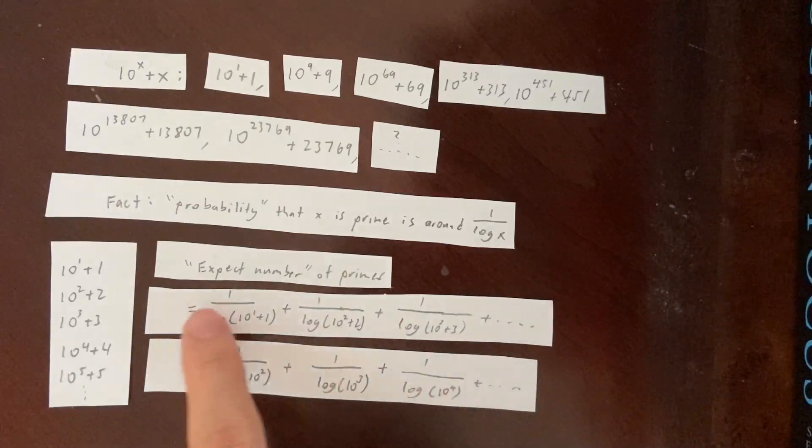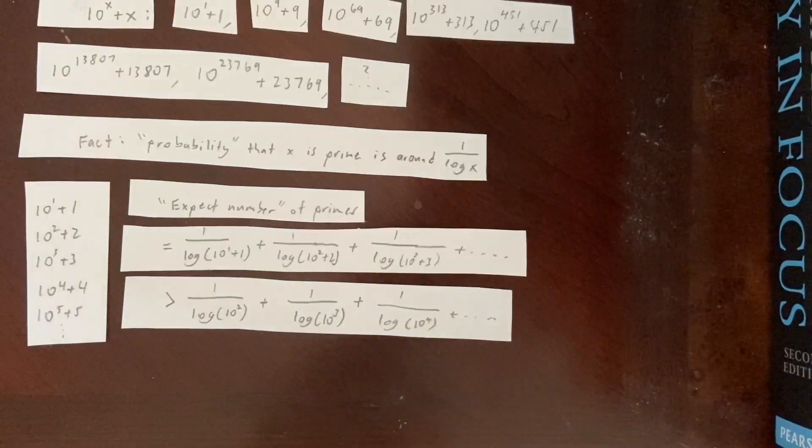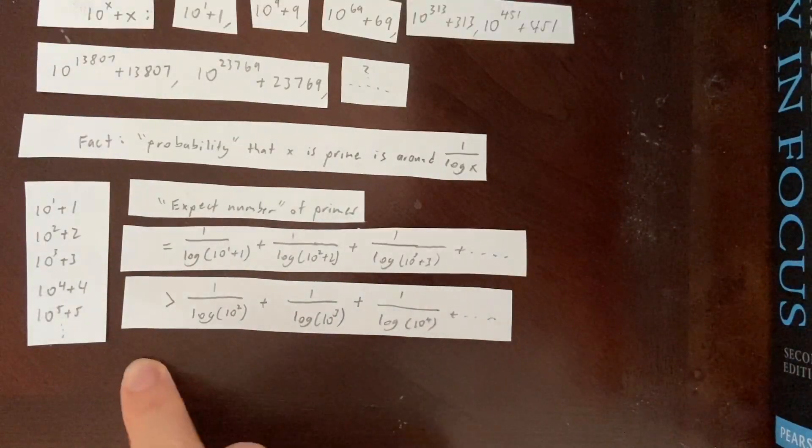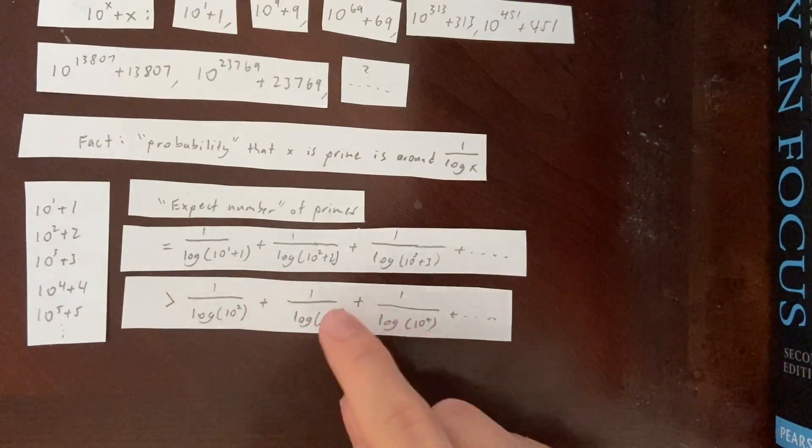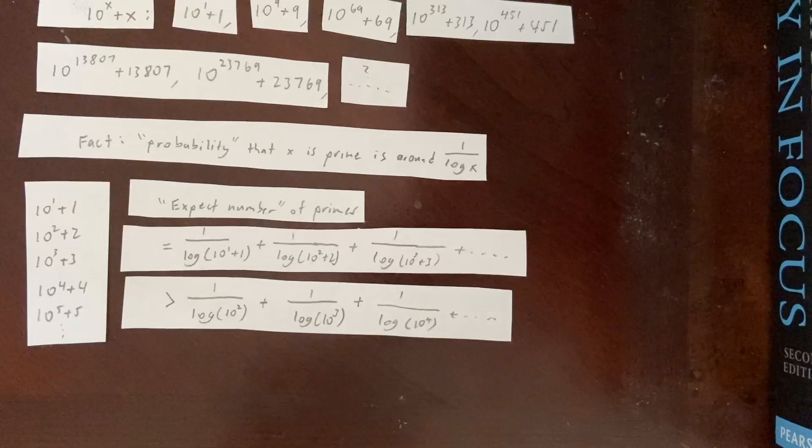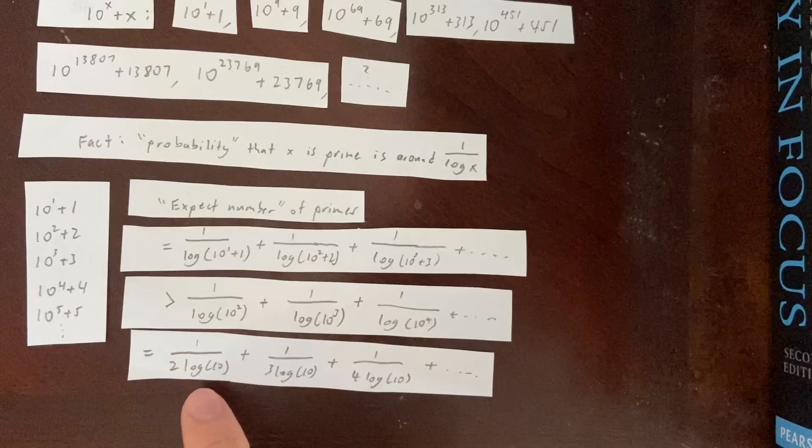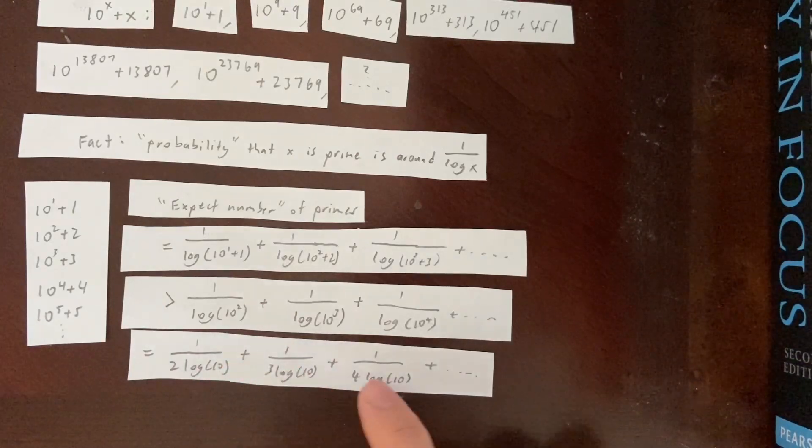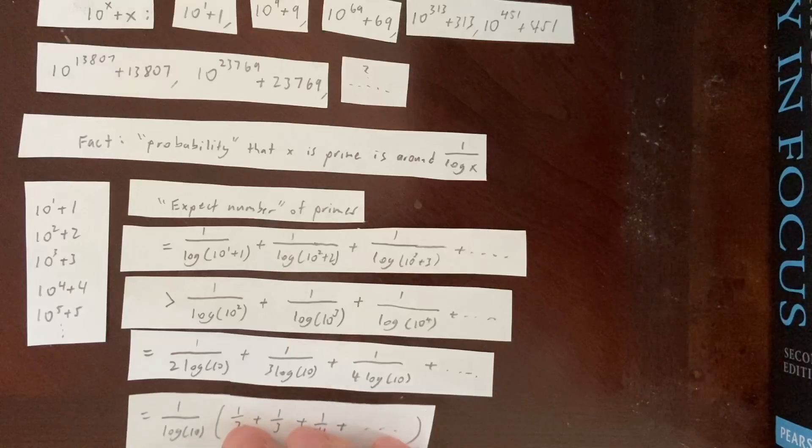But this series is a bit easier to compute. We can pull out the 2 in the exponent down here and do the same for all of these terms. So we eventually get this expression, 1 over 2 times the log of 10 plus 1 over 3 times the log of 10 plus 1 over 4 times the log of 10 and so on. And now we can factor out the 1 over log of 10 to get an expression like this.